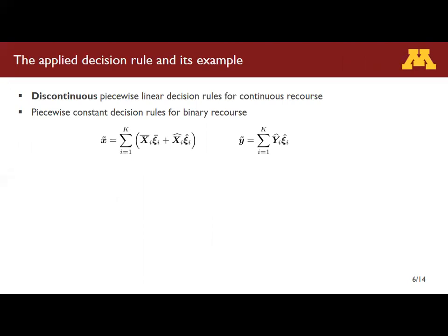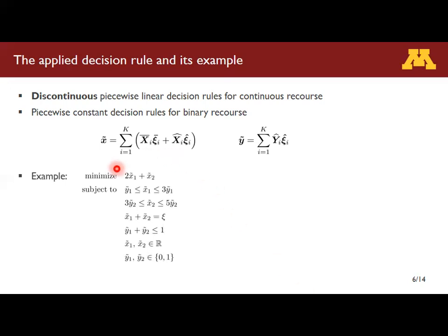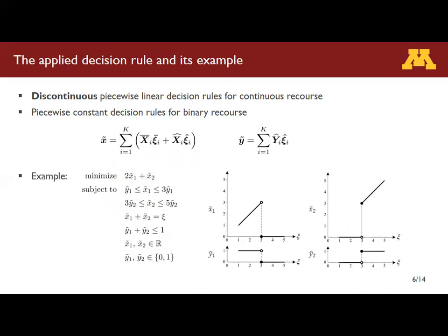To give more illustration, let's look at this simple example. X-tilde-1 and X-tilde-2 are our continuous recourse decisions, and Y-tilde-1 and Y-tilde-2 are our binary recourse decisions. X-tilde-1 and Y-tilde-2 have to both be zero in one region. But if X-tilde-2 is greater than X-tilde-1, then Y-tilde-1 has to be zero and Y-tilde-2 is 1, which allows X-tilde-2 to be non-zero. So the decision rule for X-tilde-1 and X-tilde-2 should be discontinuous piecewise linear. If we don't have this kind of decision rule, the problem is infeasible. Many problems of interest have a similar issue, so this is very practical, not just for this illustrative example.